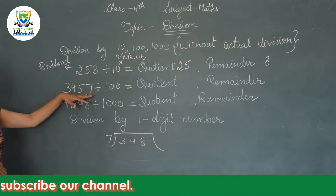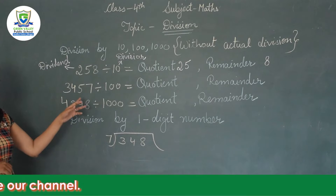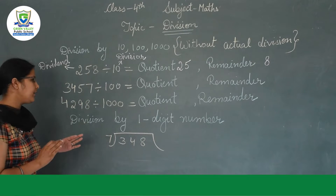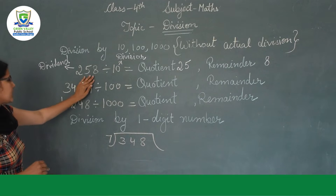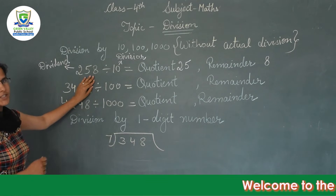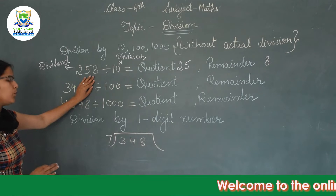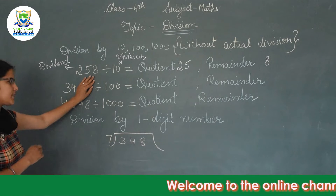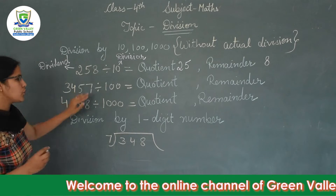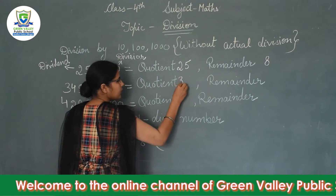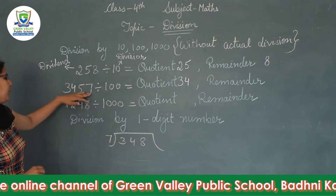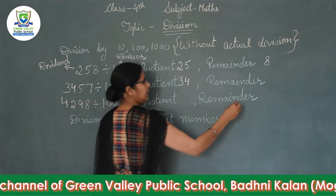Next we have 3457 divided by 100. When we divide by 100 we remove two digits — the one's and ten's place digits. What is left is 34, so the quotient is 34, and 57 is the remainder.